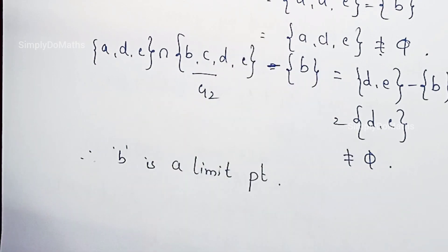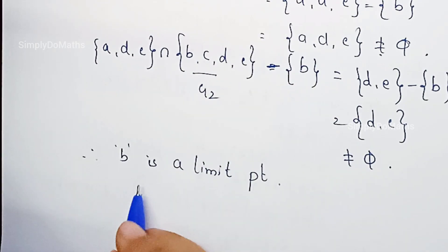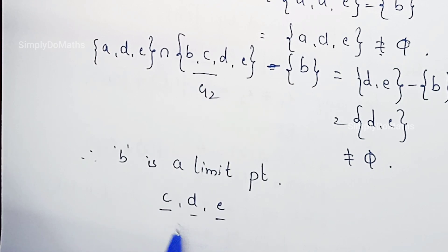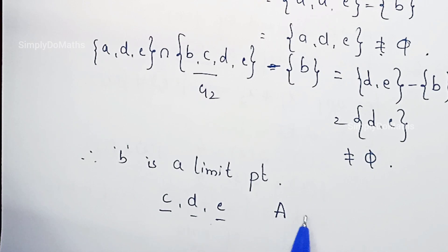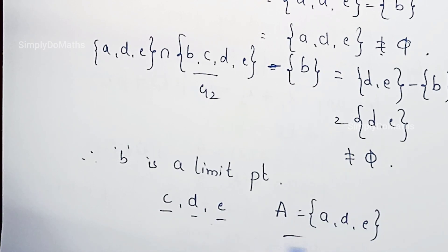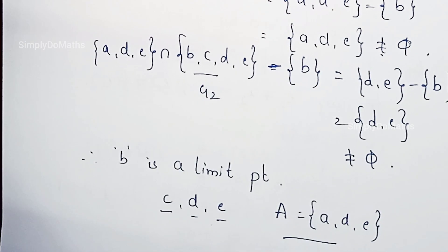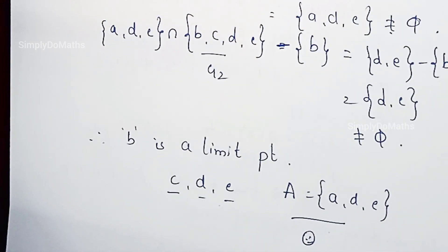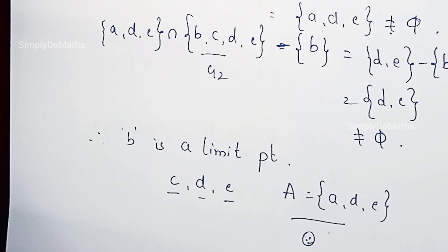I have shown that A is not a limit point and B is a limit point of capital A. Please try for C, D, and E — find whether C, D, E are limit points of capital A or not. We will see some more concepts in upcoming videos.